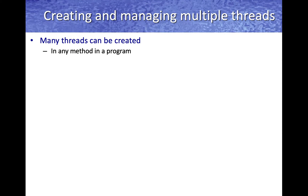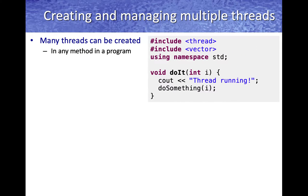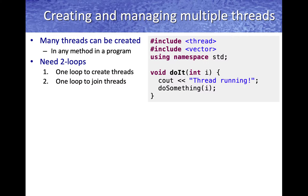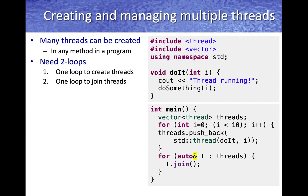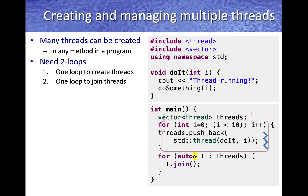Recall that threads can be created in a program from any method. So for example, if you have the do-it method, typically we'll use two loops: one loop to first create the threads, and then one loop to join the threads. So the first loop, when it runs, is going to create a vector of threads.